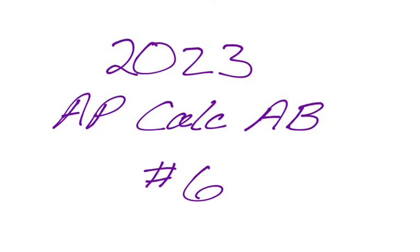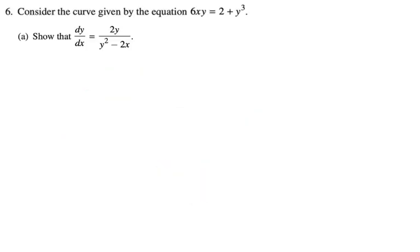In this video we're going to be doing number 6 from the 2023 AP Calculus AB exam. It is an implicit differentiation problem. Consider the curve given by the equation 6xy equals 2 plus y cubed. They ask us to show that dy/dx is 2y over y squared minus 2x. They give you this because you'll definitely need that derivative in the other parts of the problem.